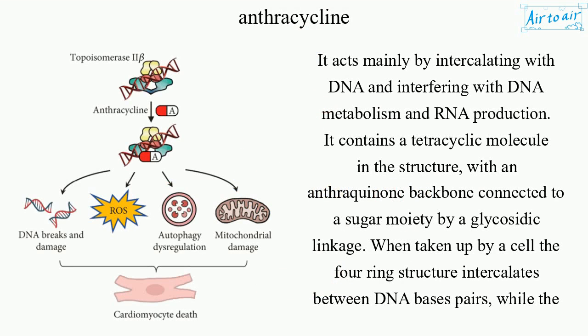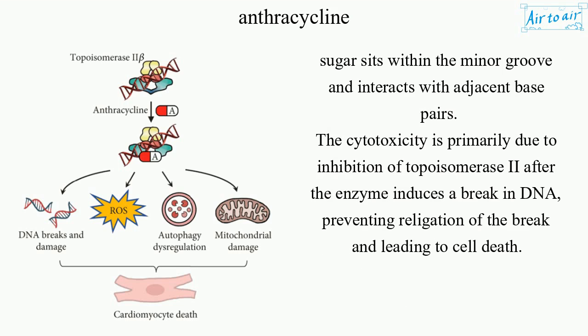It acts mainly by intercalating with DNA and interfering with DNA metabolism and RNA production. It contains a tetracyclic molecule in the structure, with an anthraquinone backbone connected to a sugar moiety by a glycosidic linkage. When taken up by a cell, the four-ring structure intercalates between DNA base pairs, while the sugar sits within the minor groove and interacts with adjacent base pairs. The cytotoxicity is primarily due to inhibition of topoisomerase II after the enzyme induces a break in DNA, preventing relegation of the break and leading to cell death.